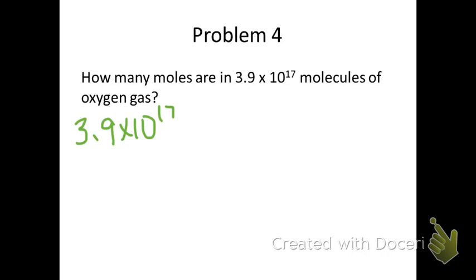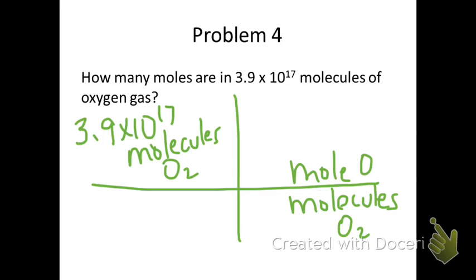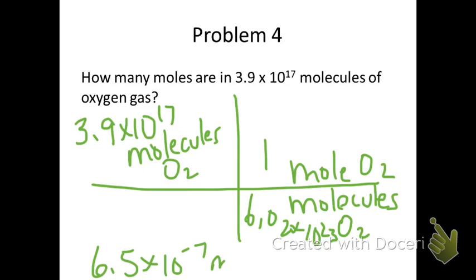There are 3.9 times 10 to the 17th molecules in the given. That means you have to put molecules in the bottom right, and you are allowed to equate that to mole. 1 mole of anything is 6.02 times 10 to the 23rd. When we calculate this, it gives us 6.5 times 10 to the negative 7 moles of O2.